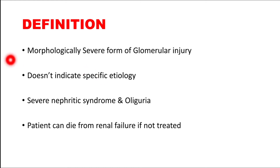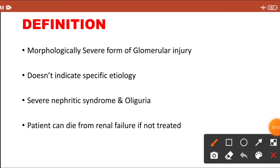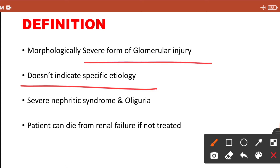RPGN is a morphologically severe form of glomerulonephritis. There is severe glomerular injury in this particular disease, and it does not indicate a specific etiology. It is a group of certain diseases — RPGN develops in certain etiologies. Simply put, it is a severe form of glomerular injury; it is not a specific etiological condition.